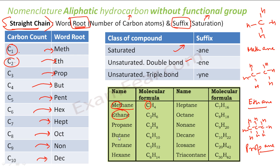Similarly, four carbons gives butane, five carbons gives pentane, six gives hexane, seven is heptane, eight is octane, nine is nonane, ten is decane, and twenty is icosane. These are all saturated compounds.